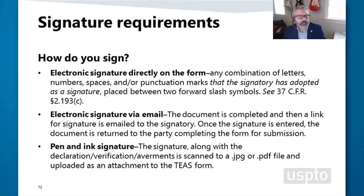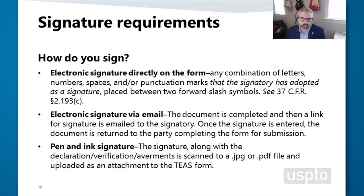Let's talk about how one would sign a submission to the office. We have two main forms that we accept. One is an electronic signature — essentially any combination of letters, numbers, spaces, or punctuation marks that the signatory has adopted as a signature placed between two forward slash symbols. If it meets those requirements under the rules, we accept the signature. The other form is the traditional pen-and-ink signature, submitted by having whoever's signing do so along with the declaration, verification, or agreements being signed, scanning those into a JPEG or PDF file, and uploading that as an attachment to the TEAS submission.